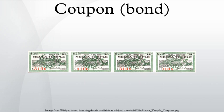The coupon rate is the yield that the bond pays on its issue date. However, this yield can change as the value of the bond changes, thus giving the bond's yield to maturity. Bonds having higher coupon rates are therefore more desirable for investors than those having lower coupon rates.